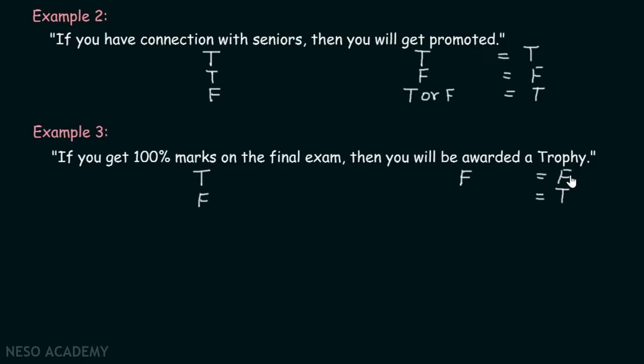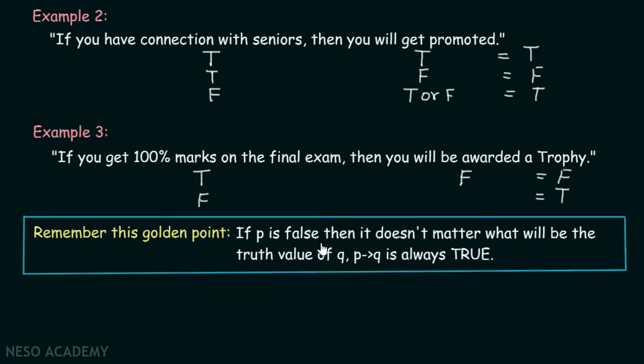Please remember this golden point: if P is false, then it doesn't matter what the truth value of Q will be — P implies Q is always true.